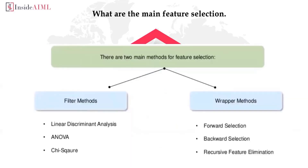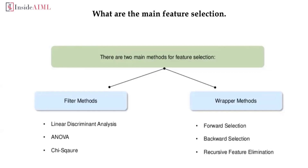The next question is: what are the main methods of feature selection? Feature selection is a process where you automatically or manually select the features that contribute most to your prediction variable. In simple terms, you decide which features to use in your model and which to leave out. For example, a person's height will never depend on where they live, so including address as a training feature is not helpful.